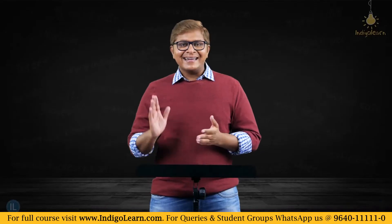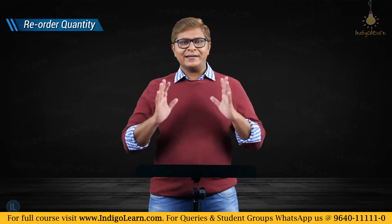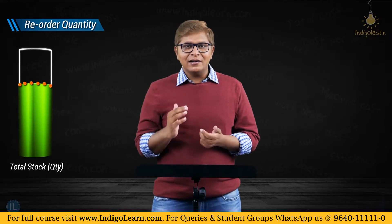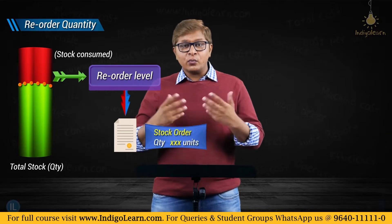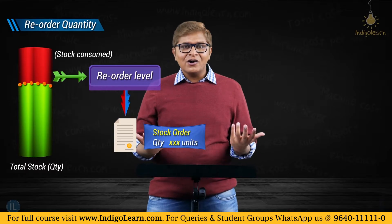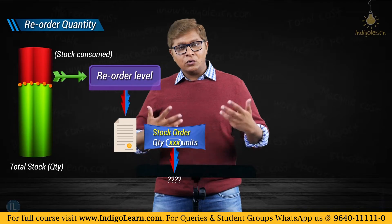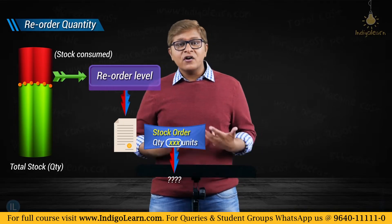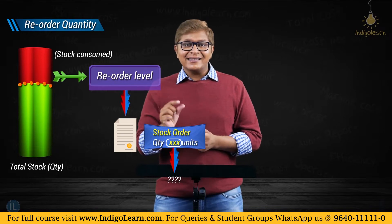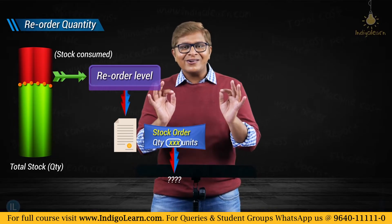Let's look at the second concept. The next quantitative level we are going to learn is the reorder quantity. Whenever we reach the reorder level, we said we are going to place an order. The question is: when we reach the reorder level, for how many units are we going to place the order? Are we going to place it for 100 units, 200 units, 20,000 units, 1 lakh units? So the order size — the number of units for which we are going to place an order — is called the reorder quantity.